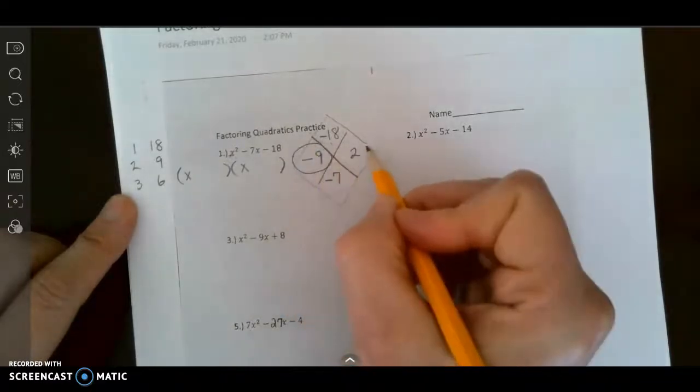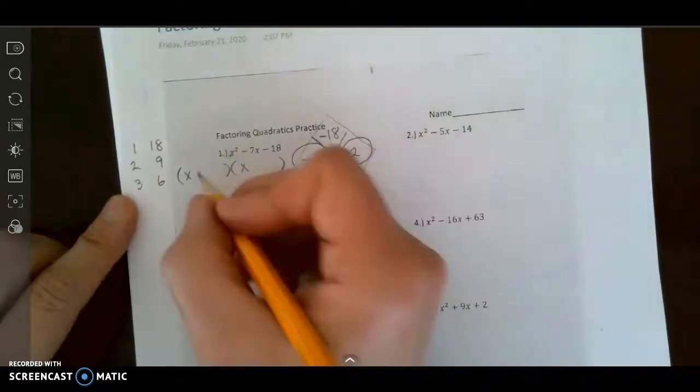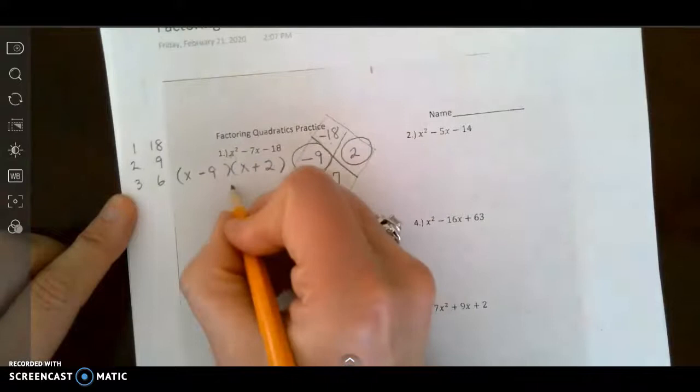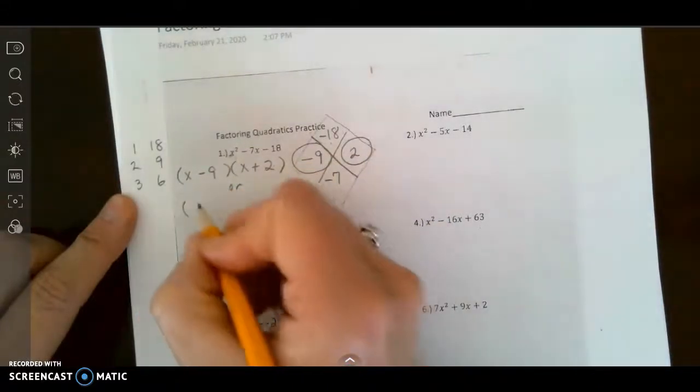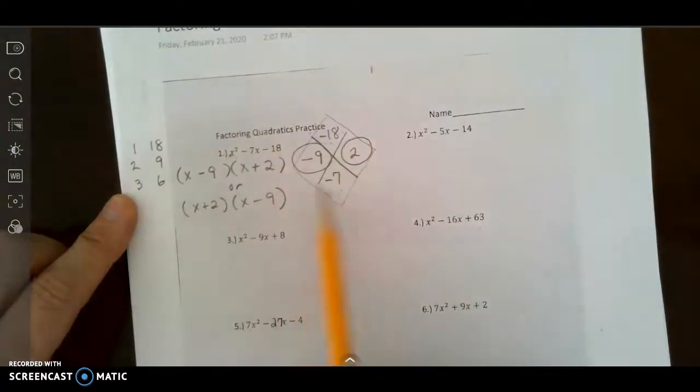Therefore this is what I'm going to put in my binomials. It doesn't matter what order, I could write it like this or I could have written it with the x plus 2 first and then the x minus 9, but it does matter the signs. It can't be a negative 2 and a positive 9 because that would give us positive 7. So this gives me my product of negative 18 and my sum of negative 7, so these are my factors either way.